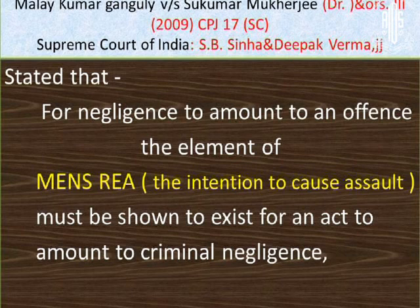The government or police has to prove that there is gross negligence which the doctor has done and because of that the patient has suffered. In the Supreme Court's Jacob Matthews case, gross negligence is defined as negligence of a high degree. The doctor did something or failed to do something which, in the given facts and circumstances, no medical professional in ordinary decent prudence would have done or failed to do.